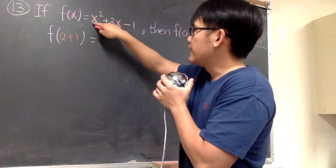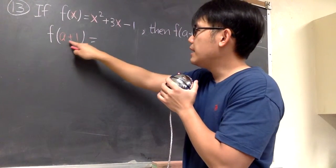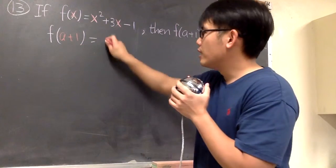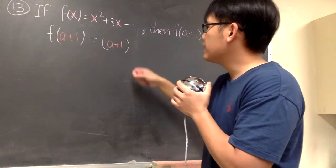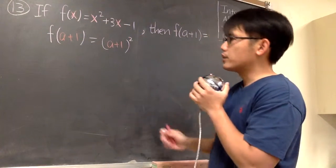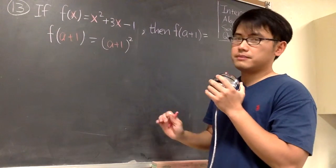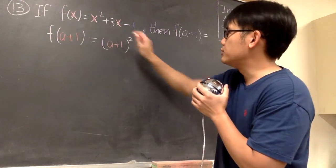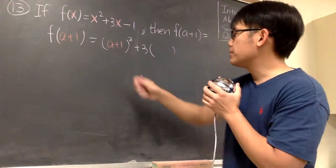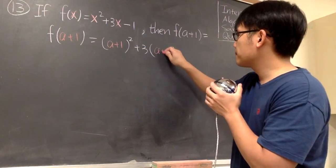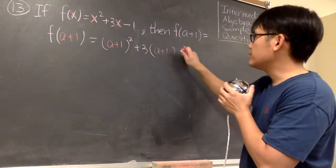Originally we had the x squared, now it becomes a+1 and then squared. Here, open the parentheses and put in a+1, and then raise that to the second power. That's the first part. Then we will have the plus 3, the x, then open the parentheses and put in the a+1. At the end, we have the minus 1.